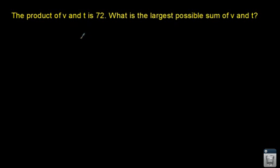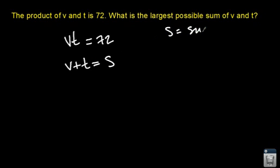In the first problem it says the product of v and t is 72. So let's go ahead and write an expression: v times t equals 72 because product means multiply. It says what is the largest possible sum of v and t? We can write the sum as v plus t equals s, where s is equal to the sum.